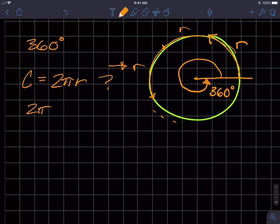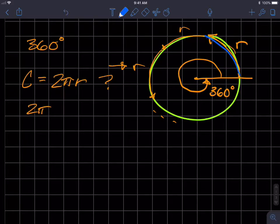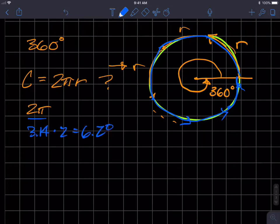So what that means is that there are 2π radiuses around the circle, 2π radiuses around the circle, 1, 2, 3, 4, 5, 6, and a little bit more. And because 3.14 times 2 is equal to 6.28...